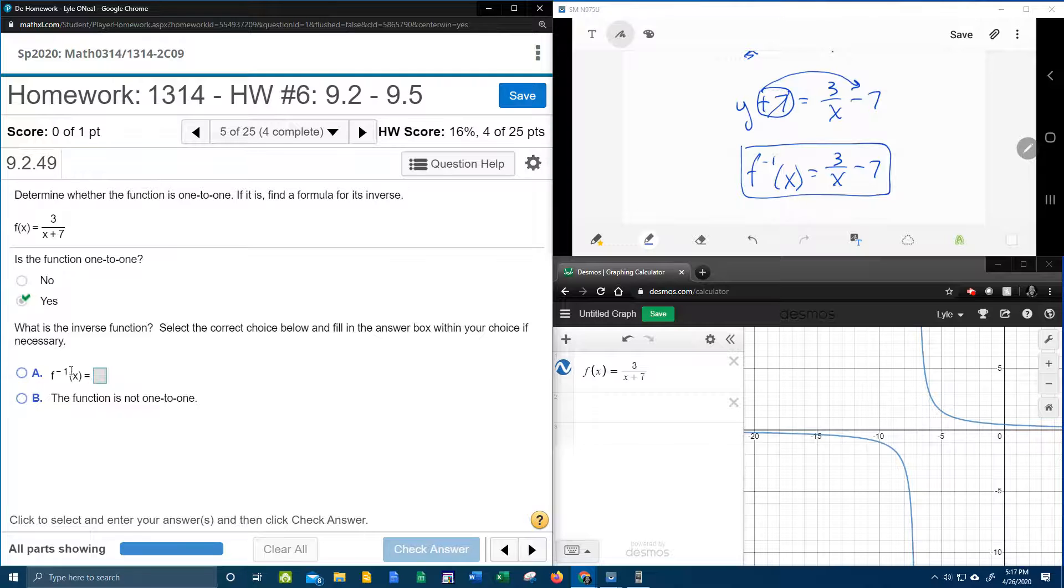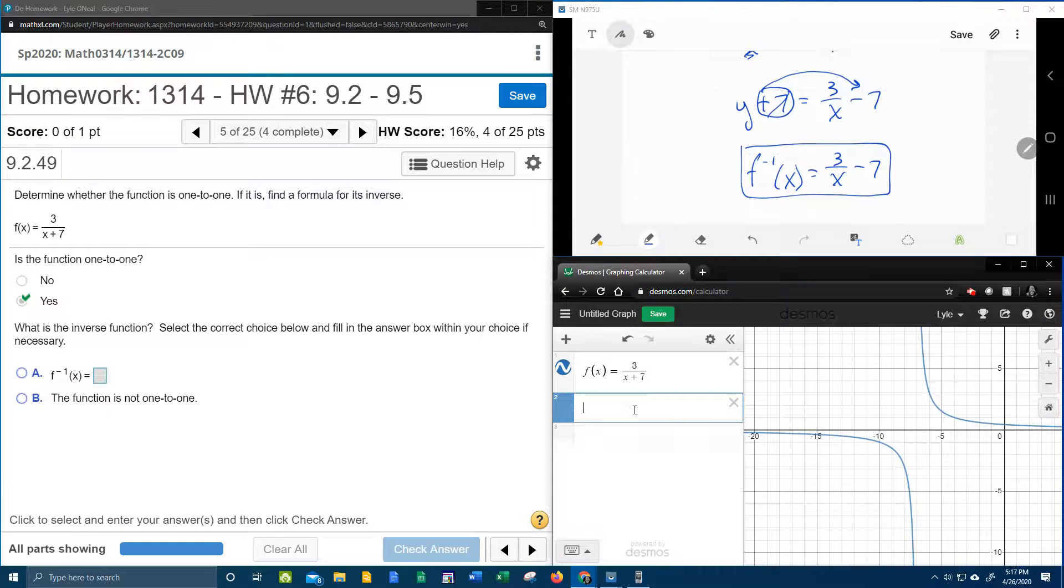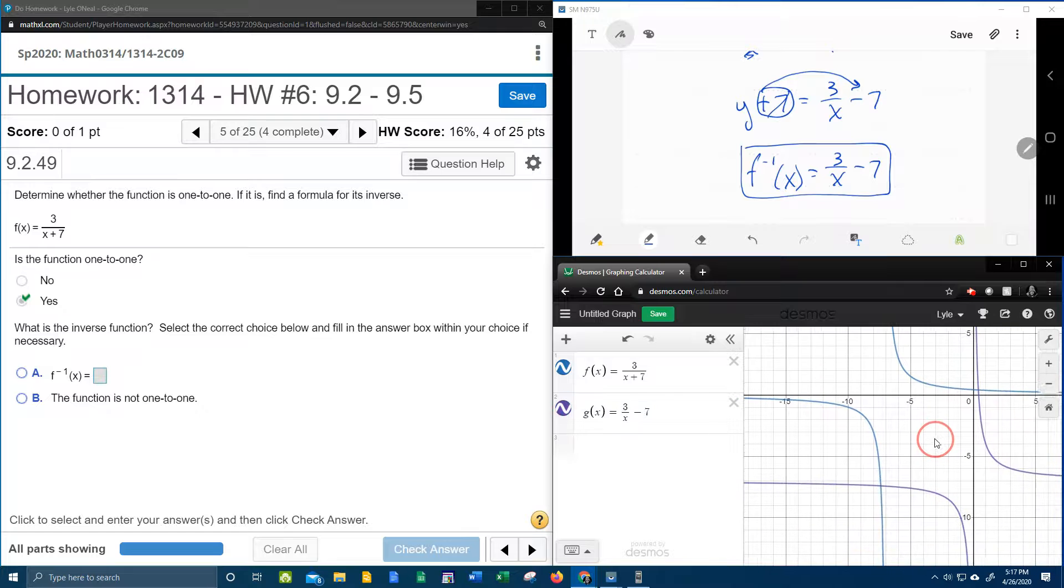Now before I put that into MyLabMath, what I'm going to do is come over here to Desmos and check it. So I'm going to put as g of x, my inverse function, 3 over x minus 7. And so there is that function.